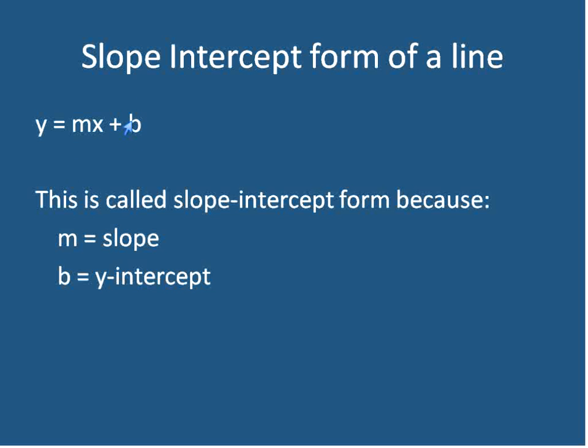b, the number out here on its own, including the sign, if it's positive or negative, that's going to be the place where the line crosses the y-axis, or in other words, the y-intercept.